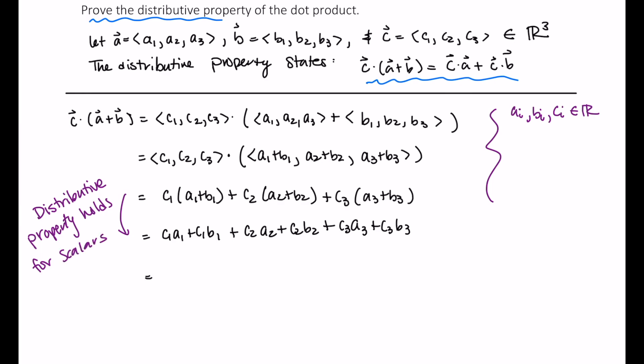Well, another property holds for scalars, that is the commutative property. So what does the commutative property tell us? And actually, really fast, I'm just going to write down what the distributive property tells us. For scalars, well, the commutative property tells us that A plus B equals B plus A. So let's do a little more rewriting.